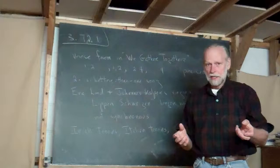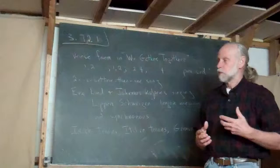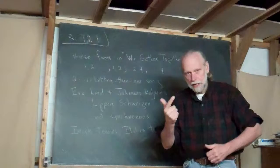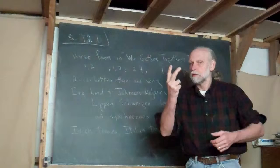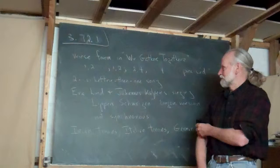When I was listening to my own presentation, I realized that actually there's a regularity to that internal rhyme which I hadn't realized. The first and second beat, we gather together, to ask the Lord's blessing, he hastens and chastens. But then the third line, the wicked oppressing now cease from distressing, is two and four. And that's the same in all three stanzas.